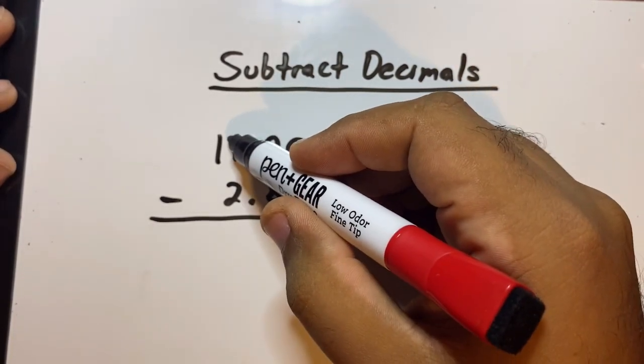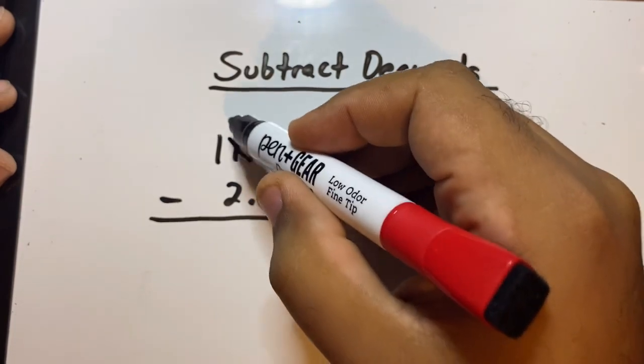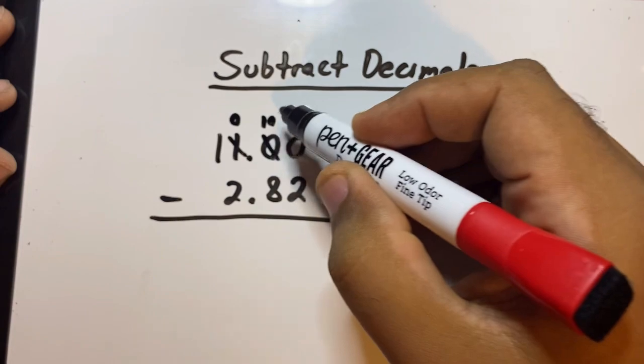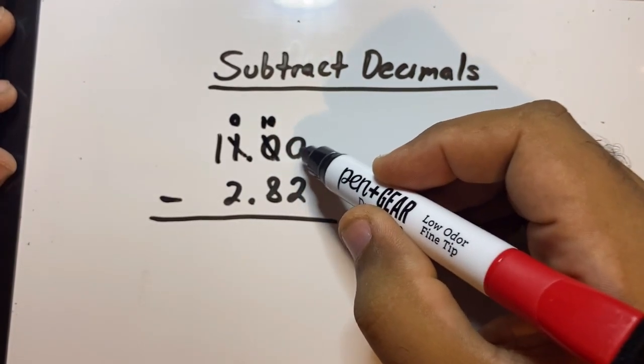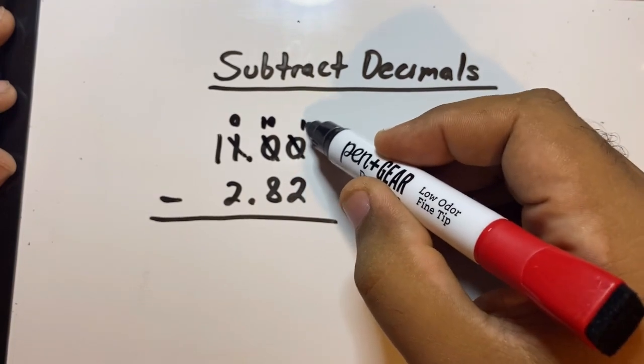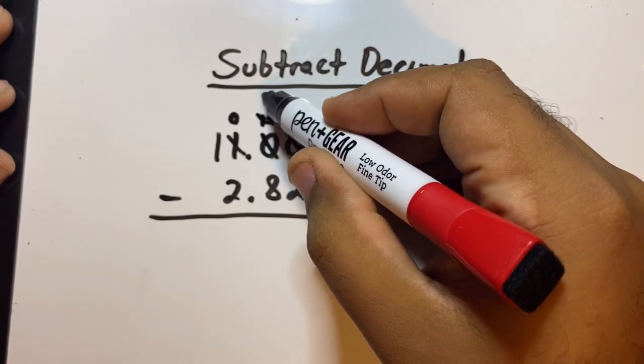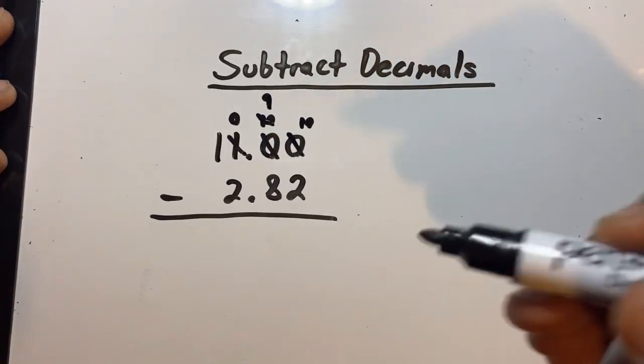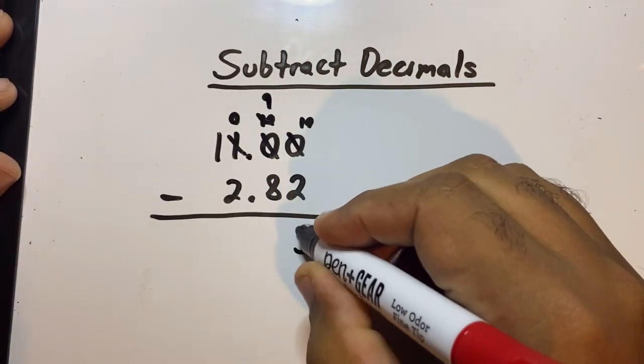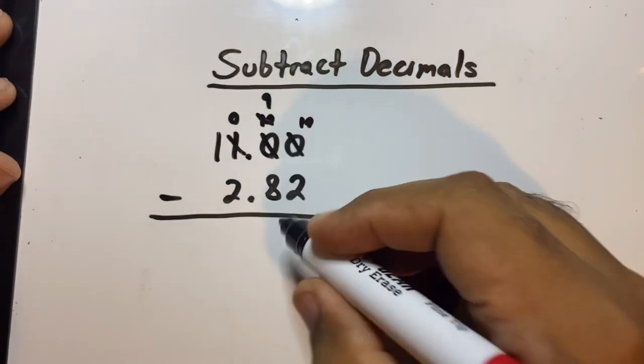So we regroup from the 1. This 1 now becomes a 0. This 0 here becomes a 10. But now we still need to regroup for this 0, so we'll take from this 10, and this 0 becomes a 10, and now this 0 becomes a 9.